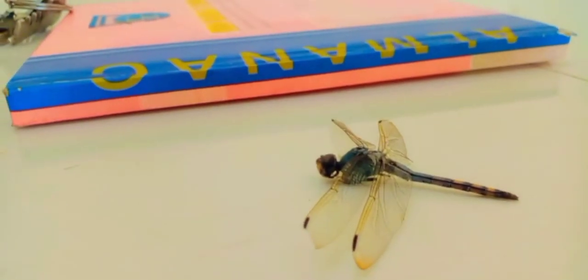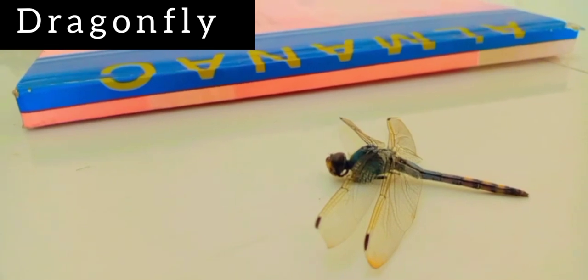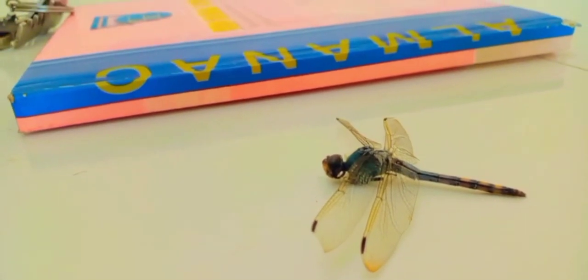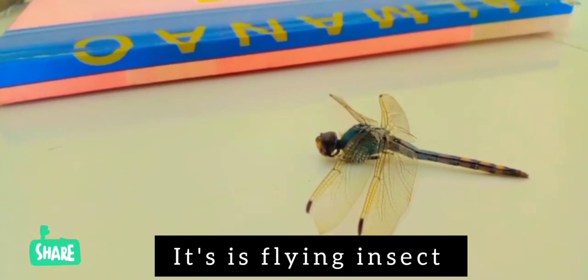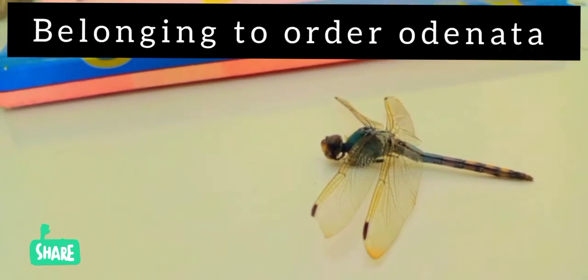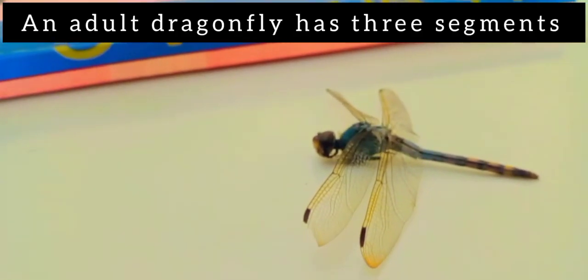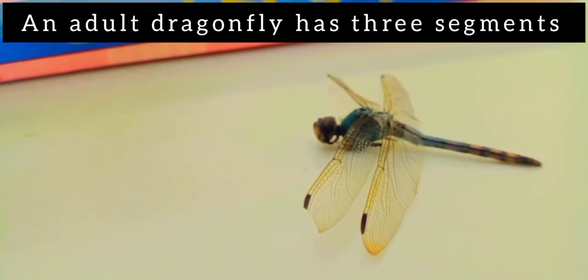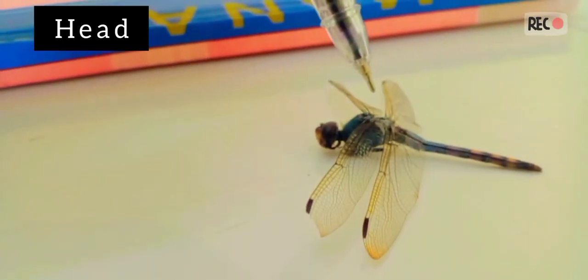Good morning, my dear friends. Today we are going to discuss dragonfly. As we all know, dragonfly is a flying insect belonging to order Odonata. An adult dragonfly has three segments: head, thorax, and abdomen.